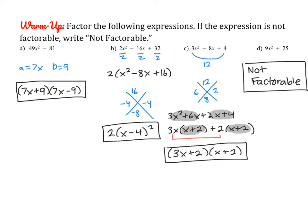For part B, there's two steps you need. First, there's a GCF of 2. Make sure you don't lose that 2. And then that remaining trinomial can be factored using magic X. So you get 2 times (x minus 4) squared.